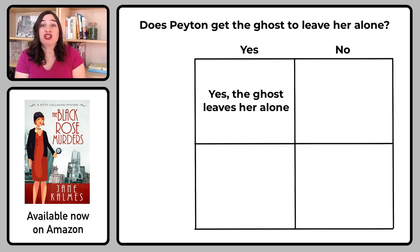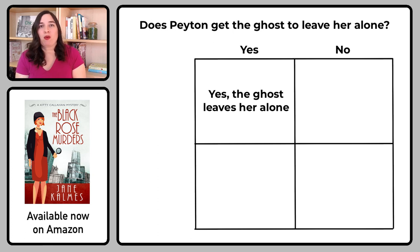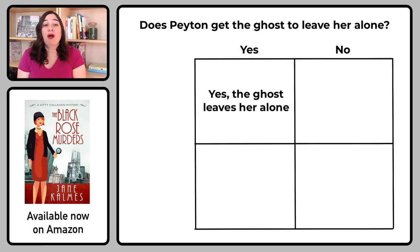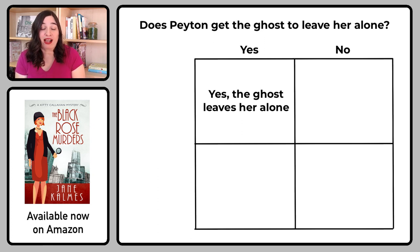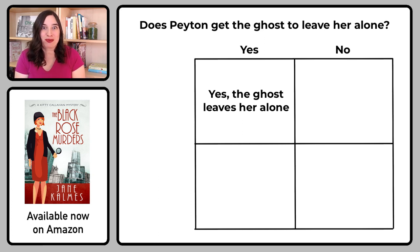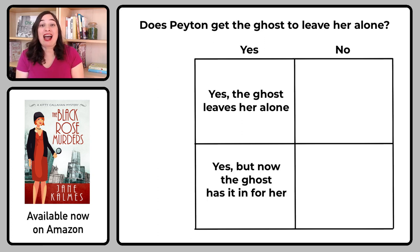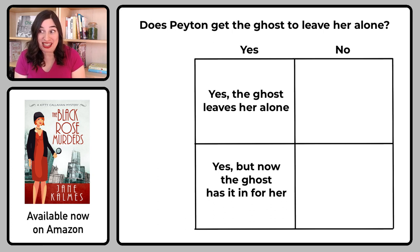What if we change that answer to 'yes, but'? What could be a price Peyton has to pay for pursuing this goal and getting what she wants? Well, maybe she convinces the ghost to stop asking her for help, but in doing so, she makes the ghost really angry at her. Now this ghost is going to be bent on ruining her wedding by playing a bunch of poltergeist-y tricks.